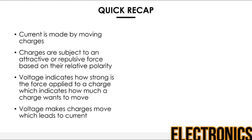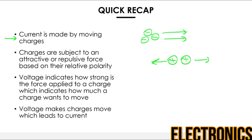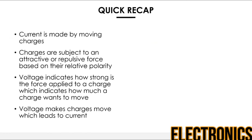Let's recap what we've learned so far. In the previous section, we learned that current is made by moving charges — in an electrical circuit, electrons move, generating electric current. We also learned that charges are subject to attractive or repulsive Coulomb forces based on their polarity. Two positive charges placed close together will repel; two negative charges the same. Conversely, a positive and a negative charge will attract each other.